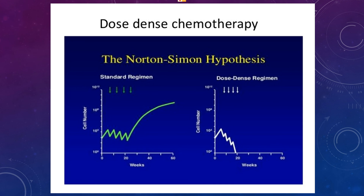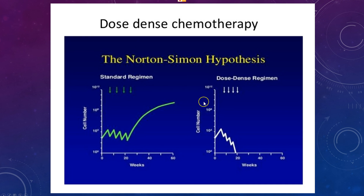Finally, the patient finishes treatment and is sent home, but after some time the remaining cells regrow, multiply exponentially, and over time the cancer comes back in full force — that is a bad outcome. But what happens if we decrease the interval to 14 days rather than 21 days? The cancer cells go down and don't have time to come back up before the next dose is given, and so on, until when the whole treatment is over the cancer cells are completely or almost completely destroyed and the cancer does not grow back.